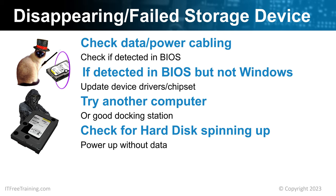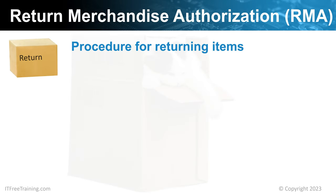If the storage device is damaged, it may shut down intermittently. If the storage device is doing this, it is recommended that when it is working, copy the data off as soon as possible. Once you have the data off, replace it. In some cases, replacing the storage device may be a simple matter of returning it from where you purchased it. In other cases, you may need to go through a procedure for returning the item referred to as an RMA.